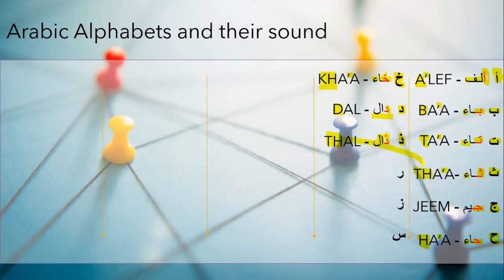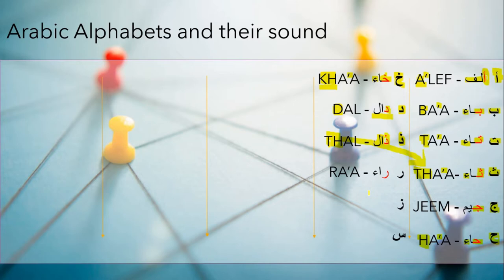Thal — again we are using two letters to express the letter Thal. I'm using TH here in Thal and TH in the letter Tha — but here it's like 'these' and 'those' and 'the.' As you pronounce Thal in English, you pronounce it in the word 'the,' or 'these,' or 'those.' However, in Tha, it's 'Thursday.'